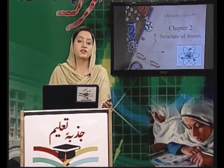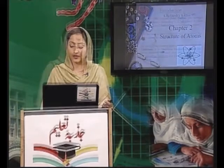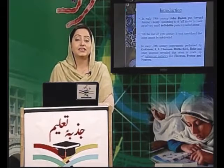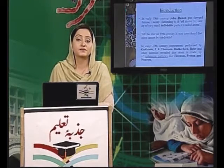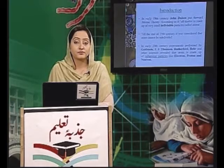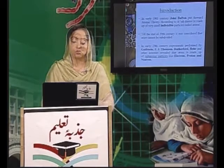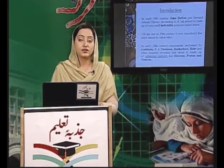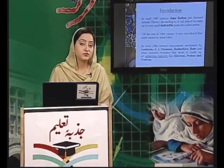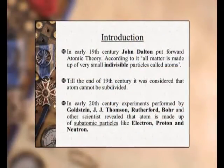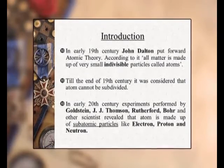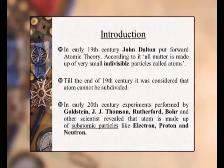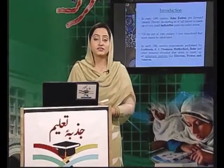किस किस scientist ने क्या क्या contributions कीं जिनकी वजह से आज हमें atom के structure के बारे में जो कुछ भी मालूम है वो उन्हीं की मेहनत है। History से देखते हैं कि किस तरीके से structure of atom को पढ़ना शुरू किया गया। 19th century में John Dalton ने atom के बारे में बताया कि atom एक indivisible particle है जिसको मजीद नहीं तोड़ा जा सकता। 19th century के आखिर तक यही माना जाता रहा कि atom सबसे छोटा जर्रा है मादे का। लेकिन Goldstein, JJ Thomson, Rutherford, Bohr जैसे scientists ने बताया कि atom indivisible नहीं بلکه divisible है کیونکہ وہ sub-atomic particles یعنی electron, proton اور neutron سے بنا ہے۔